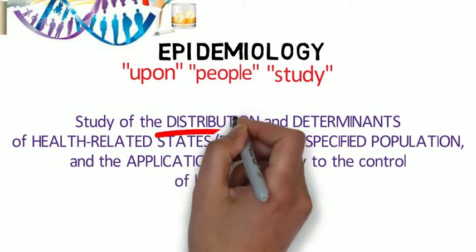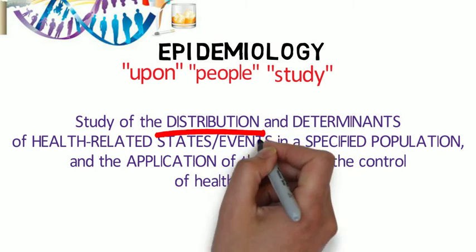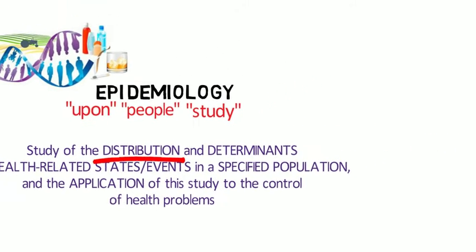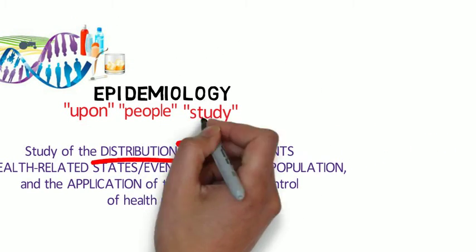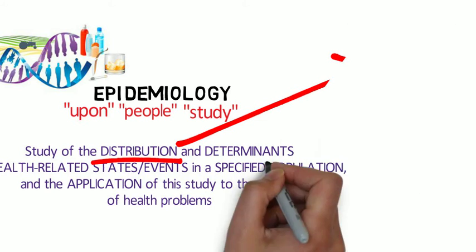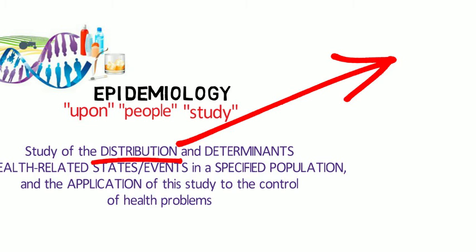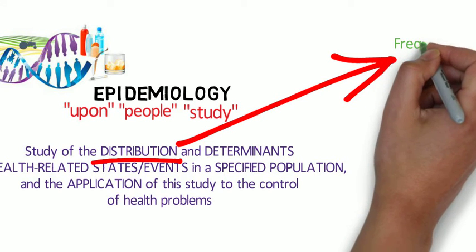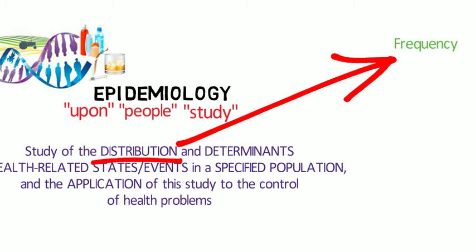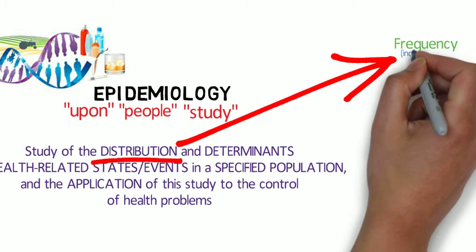Epidemiology is concerned with the frequency and pattern of health events in a population. Frequency refers not only to the number of health events, such as the number of cases of meningitis or diabetes in a population, but also to the relationship of that number to the size of the population. The resulting rate allows epidemiologists to compare disease occurrence across different populations.